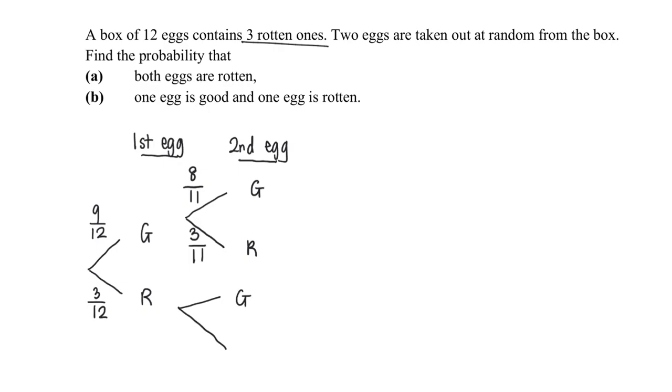So I continue to do for the below branches. It is still good or rotten. But this scenario is that the first egg is rotten. So again, 1 over 11. That means I did not take out any good egg here. So it remains at 9. But I have taken out 1 rotten egg. I am left with 2 rotten eggs.